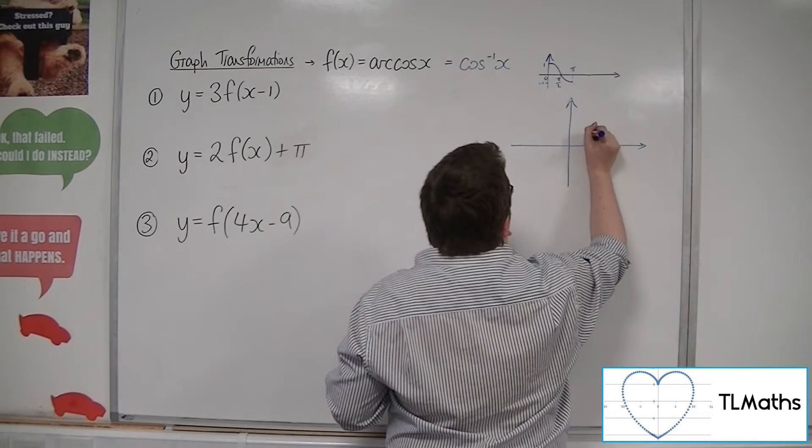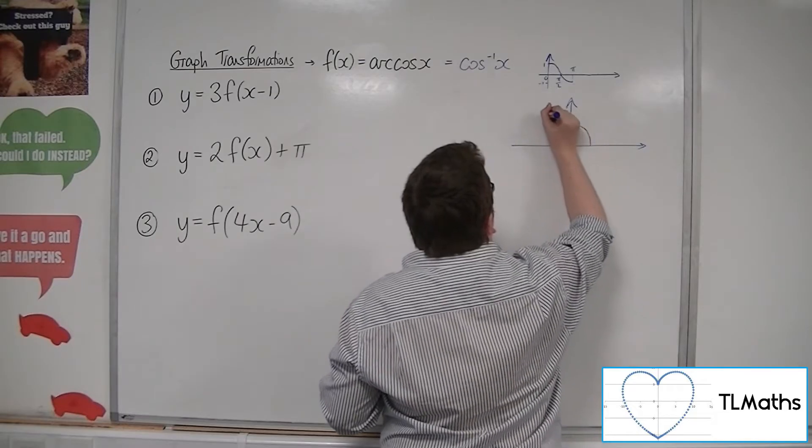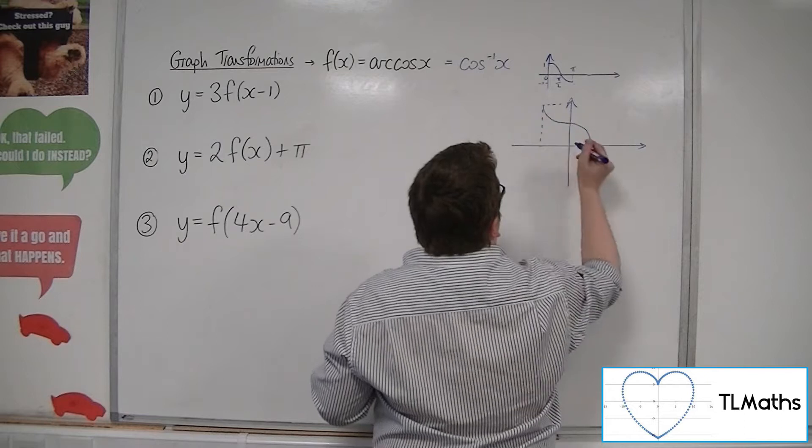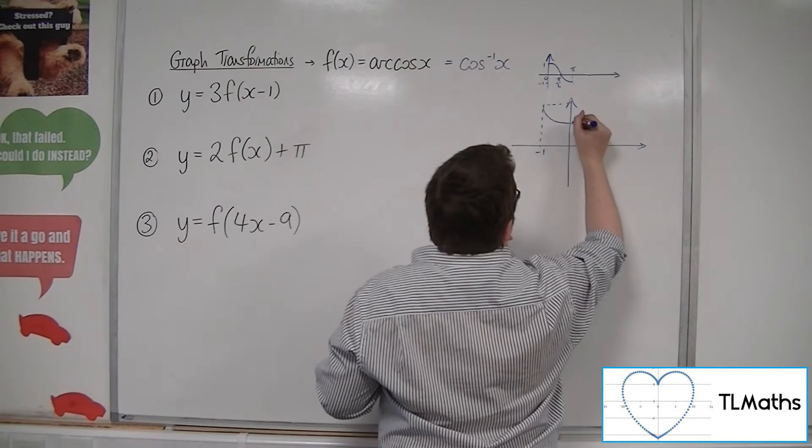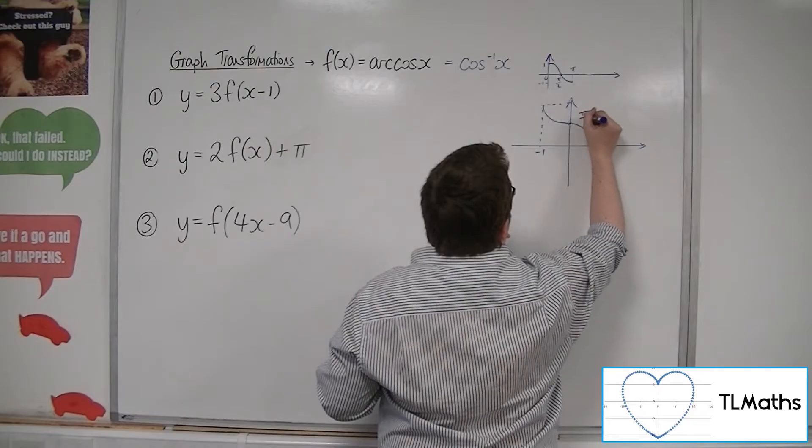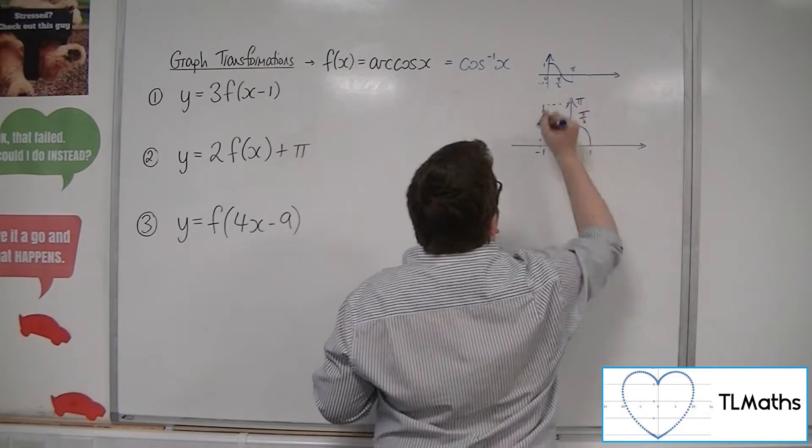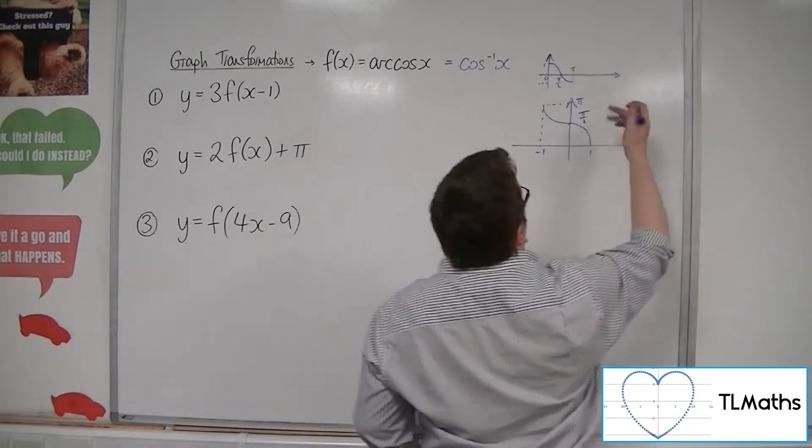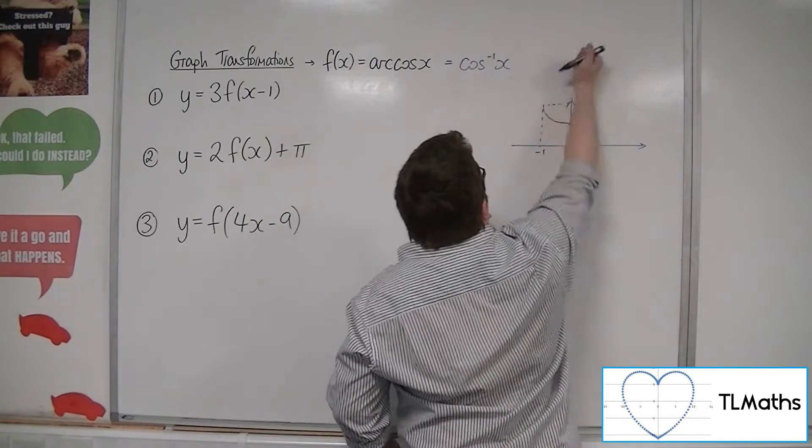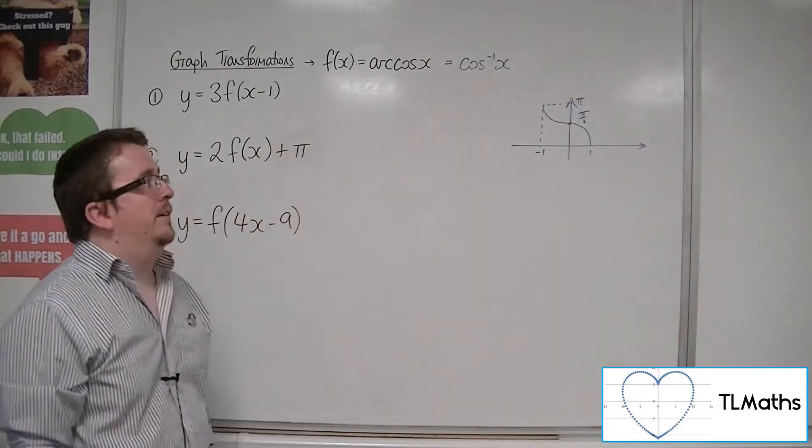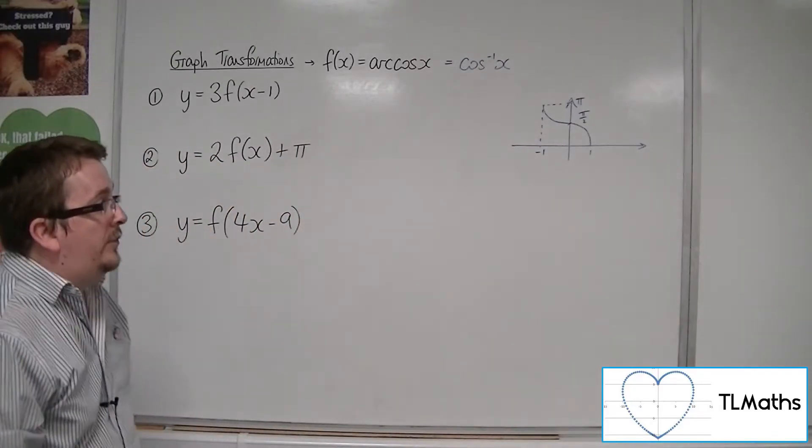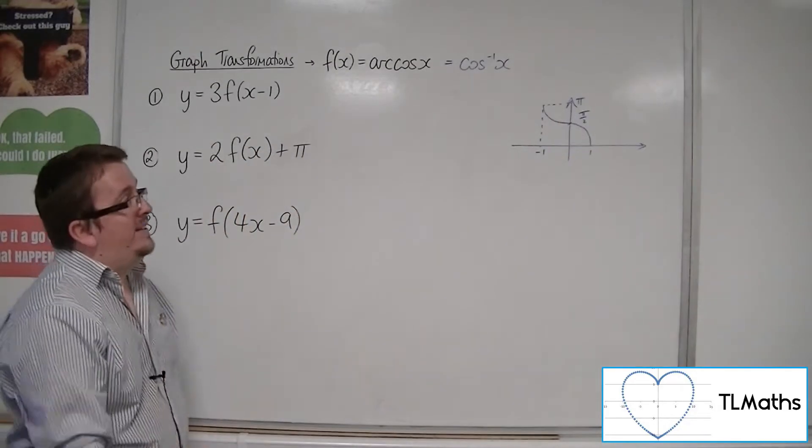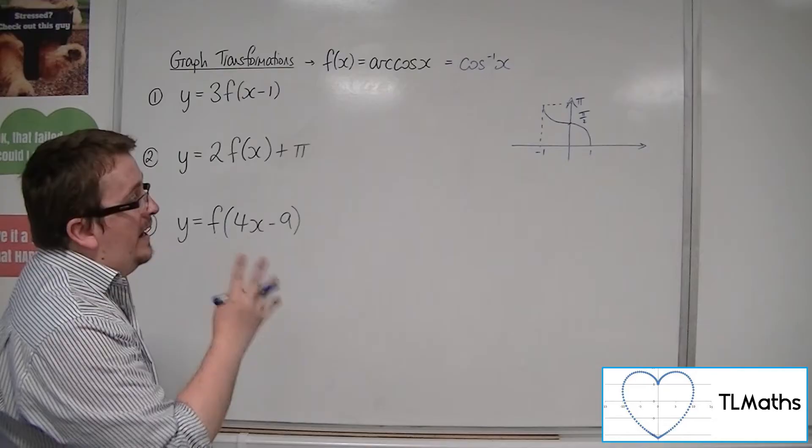Then we go up and then across. So this point here will be at minus 1. That's at 1. This point is at pi over 2. This point is at pi. This is the curve of y equals arc cos x. And it all comes from the original cosine curve being reflected in the line y equals x. That is the whole of the curve. It doesn't repeat going down or above. That is it.